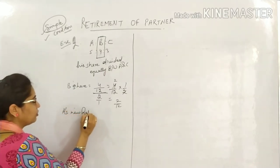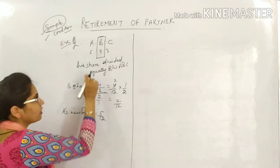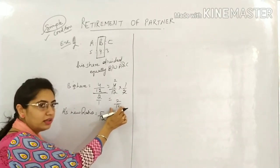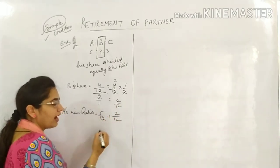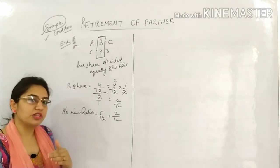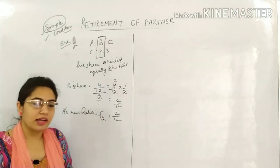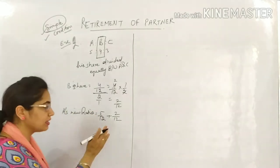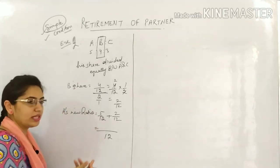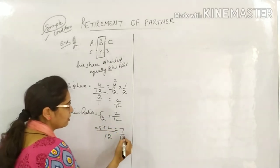A's new ratio: A was previously getting 5/12, plus the additional share of 2/12 received from B. Since both have denominator 12, the LCM is 12. So 5+2 = 7, giving A a new share of 7/12.